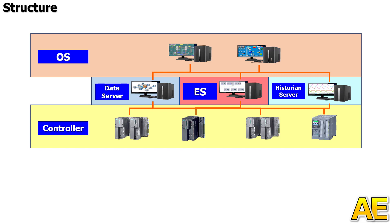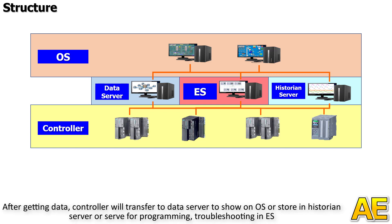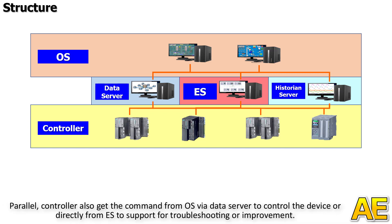The next layer is the Controller. Controllers have the function to get data from the IO connected to field devices or from equipment via industrial connections such as Ethernet. After getting the data, the controller transfers it to the data server to store on the OS, store in the historian server, or serve for programming and troubleshooting in the ES. The controller also gets commands from the OS via the data server to control devices, or directly from the ES to support troubleshooting and improvement.